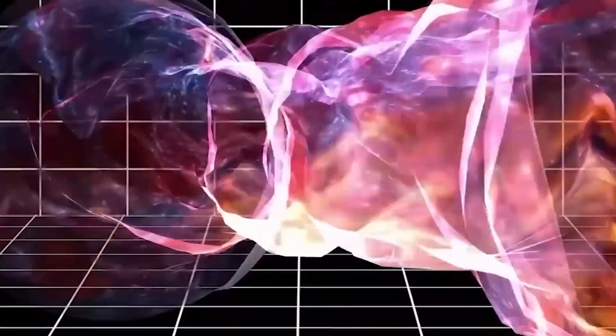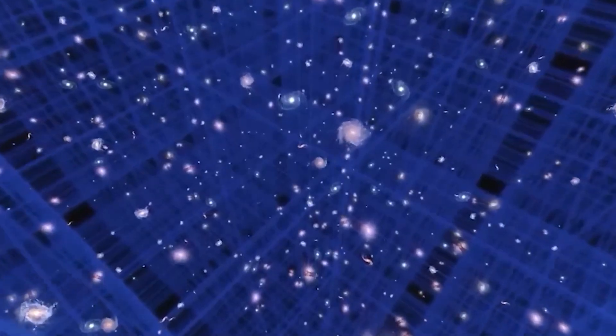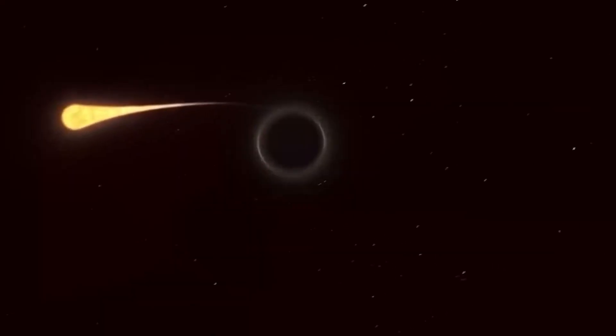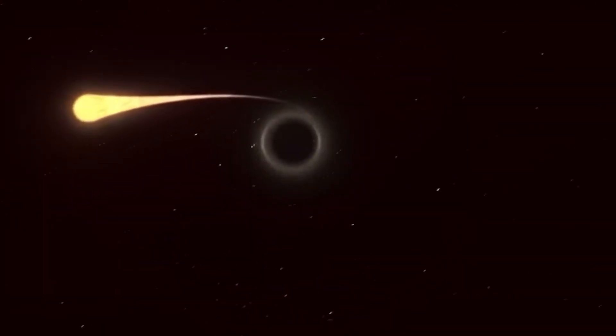The discovery of the powerful magnetic fields around black holes has major implications for our understanding of how black holes grow and evolve. Black holes are thought to grow by accreting material from their surroundings, and the new image shows that magnetic fields play a critical role in this process.